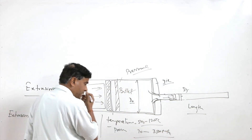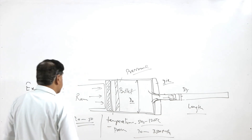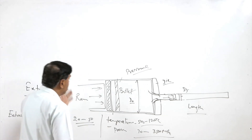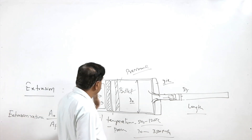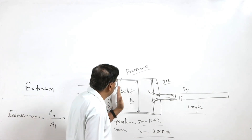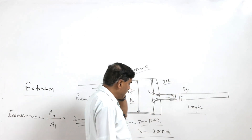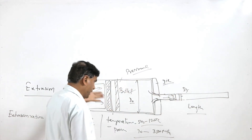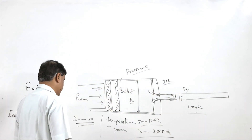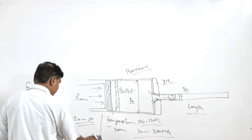Very high pressures can be used because when pressure is built up with the help of the ram onto the billet, it starts flowing out and takes the shape of the die opening.